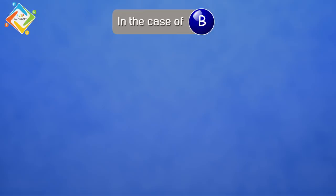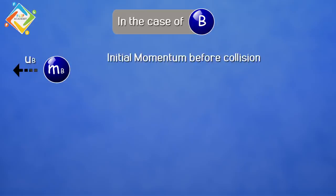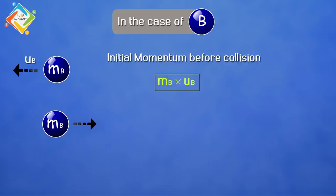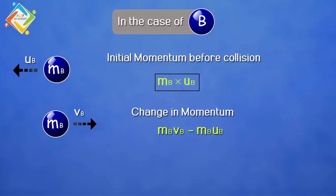In the case of ball B, it is moving with initial velocity uB. The initial momentum of this ball before collision is mB × uB. After collision, ball B moves with final velocity vB, so the final momentum becomes mB × vB. The change in momentum is therefore mB·vB minus mB·uB, which on taking mB common becomes mB(vB − uB).